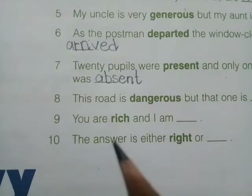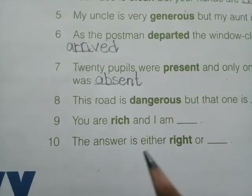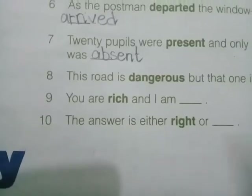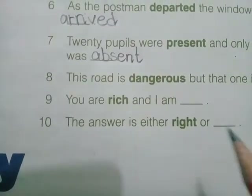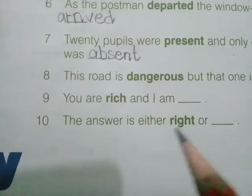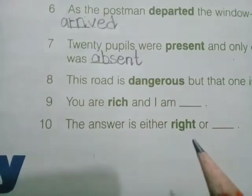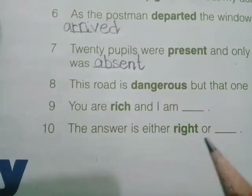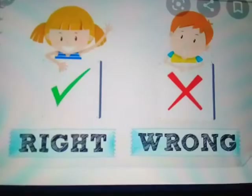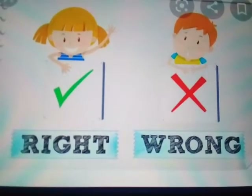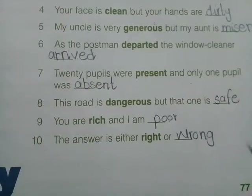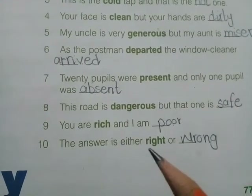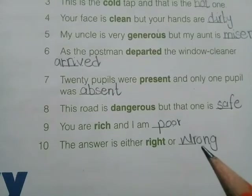Number ten: 'the answer is either right or dash.' 'Right' means a true statement. The opposite of right will be 'wrong.' So the answer is wrong.